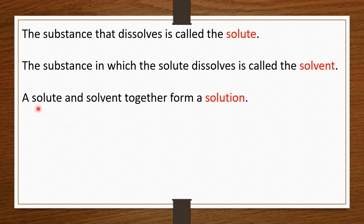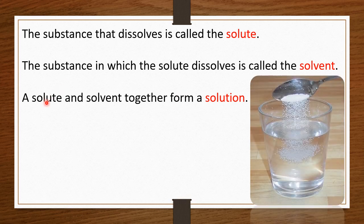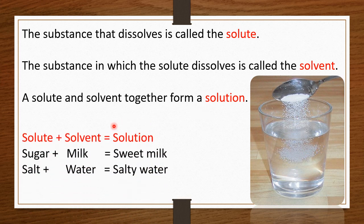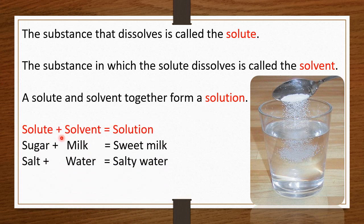Now, the substance in which the solute dissolves is called the solvent. For example, salt dissolves in water — so water is the solvent. A solute and a solvent together form a solution. You can see in the picture — we have taken salt as solute and water as solvent, and when we mix these two, a salty water solution is formed. So solute plus solvent equals solution.